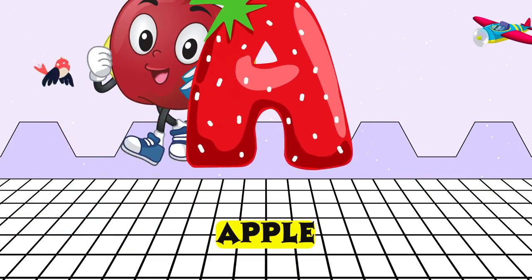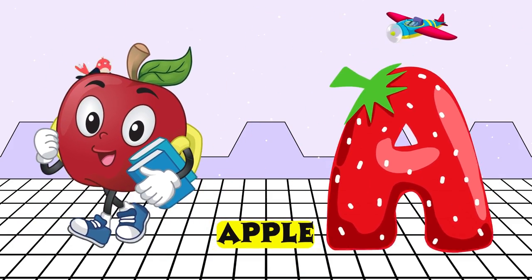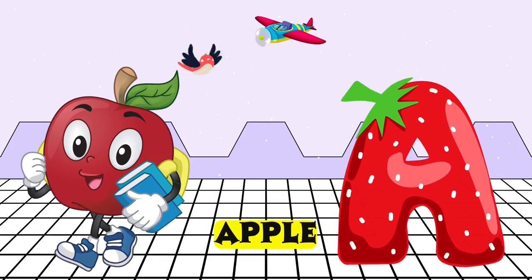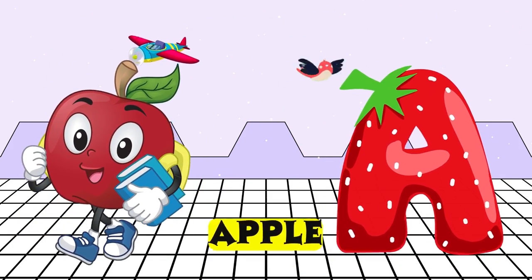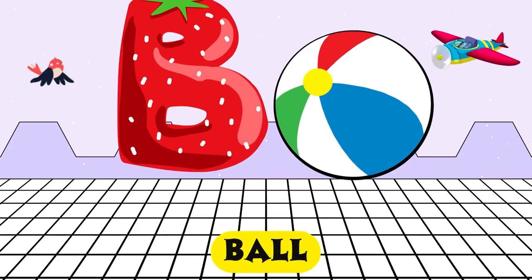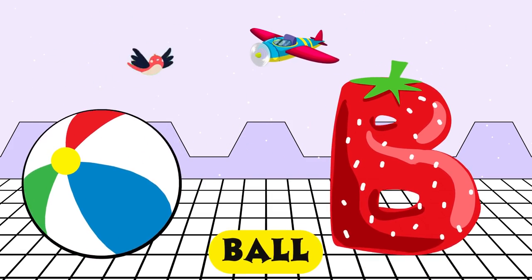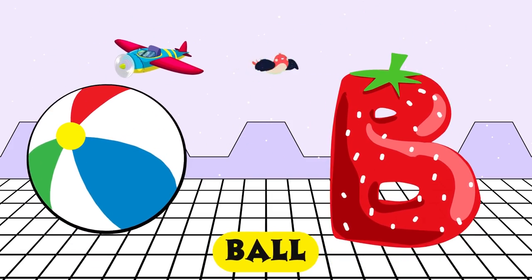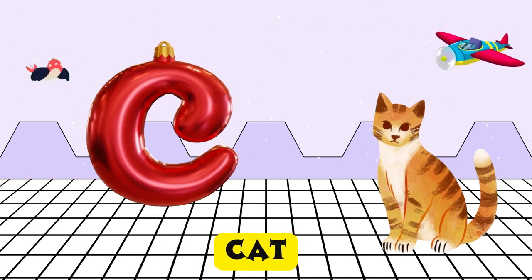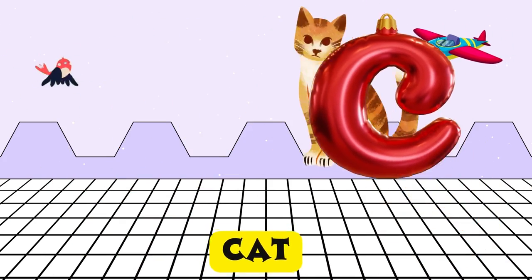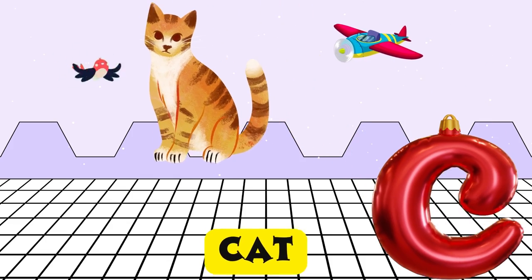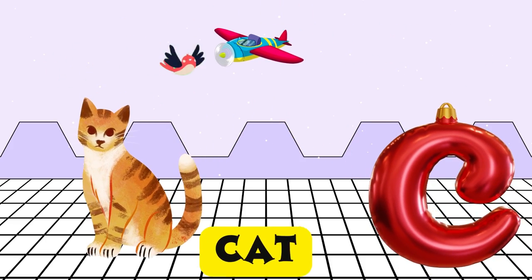A is for apple, a-a-apple. B is for ball, b-b-ball. C is for cat, c-c-cat.